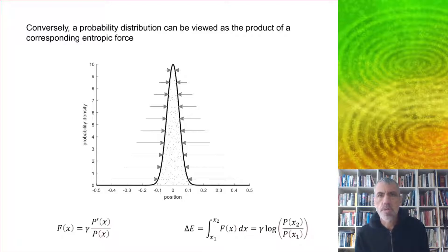This showed that from having information implies that we can get a kind of force out of it. Conversely, a probability distribution can be viewed as the product of a corresponding entropic force. If there's a likelihood that a particular particle is going to be located within a certain zone, but not outside that zone, we can imagine there's a force acting on that particle to keep it in that area. Instead of a particle, it could be an idea or in economics, something like a price estimate.